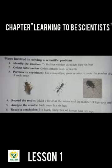The second step is to collect information. We will collect different insects. The third step is to perform an experiment. We will use a magnifying glass to count the number of legs of each insect. A magnifying glass is an instrument that helps us see small things. We will count the number of legs of each insect.